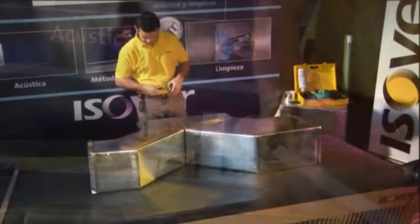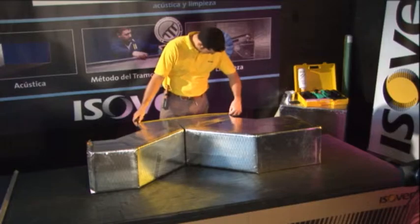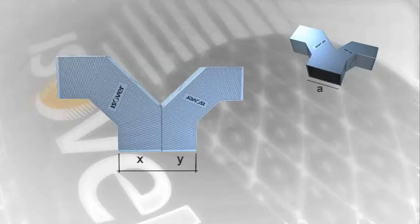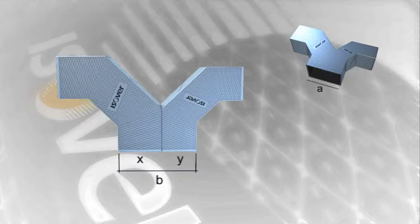It is made from two elbow ducts with dimensions X and Y respectively. The first step is to add the external measurements of the two air flow outlets X and Y. From this sum, subtract the measurement A.